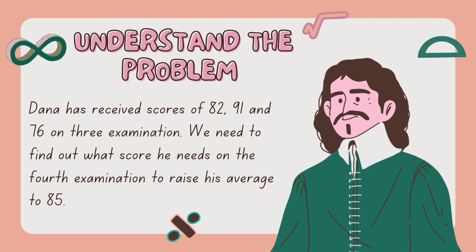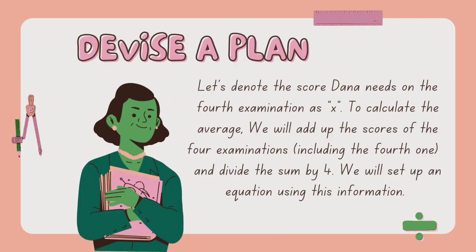The second step is to devise a plan. Let's denote the score Dana needs on the fourth examination as X. To calculate the average, we will add up the scores of all four examinations, including the fourth one, and divide the sum by 4.